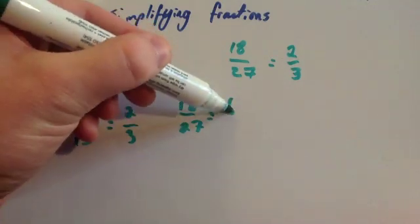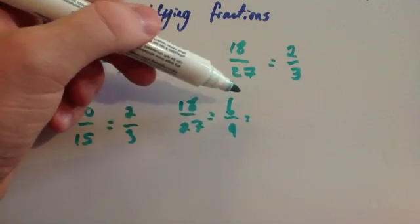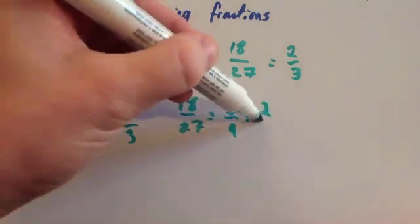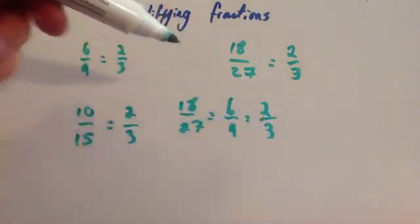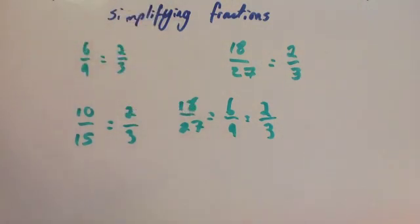And then you'll notice they're also divisible by three, so you'd have to simplify it and carry on. And then six divided by three is two and nine divided by three is three. So sometimes you may cancel it down and then realize that you can cancel it down even further, so just make sure you're simplifying it fully.